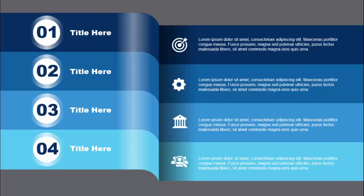In today's tutorial I am going to show you how to create a four rectangular options infographic slide in PowerPoint. I have added four options with shades of blue — dark blue at the top and light/sky blue at the bottom. I put the option number within an oval shape, you can add the title, and I have given a glossy effect. On the right side you can add icons and detailed text.